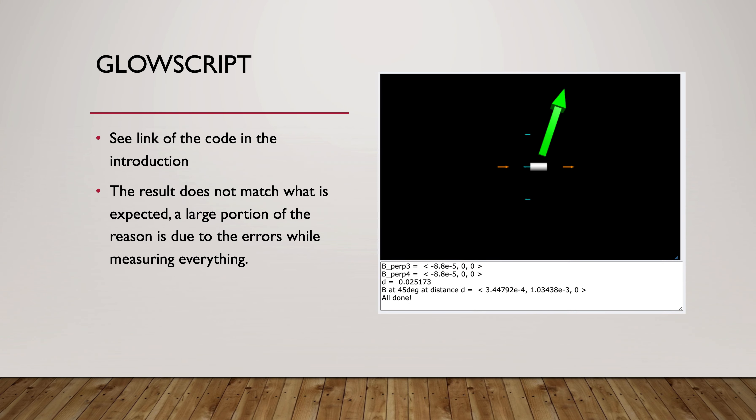Because this is a lab, I'm not going to put any fake numbers in there. When I put my value into the GlowScript code, as a result, as shown on the right, you will see the perpendicular magnetic field and then our 45 degrees.